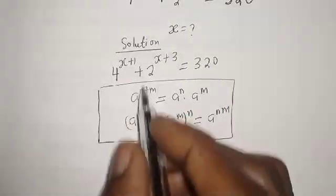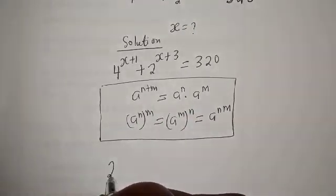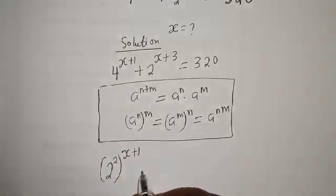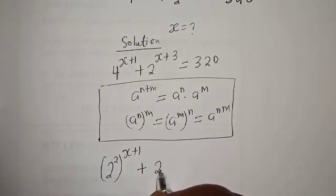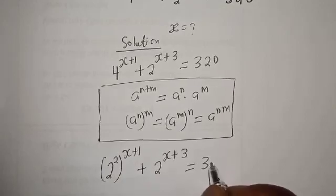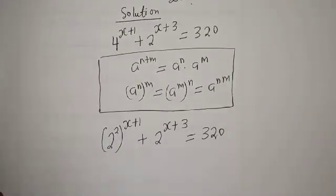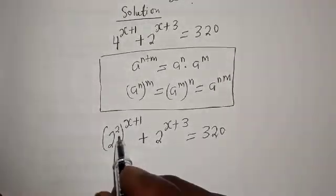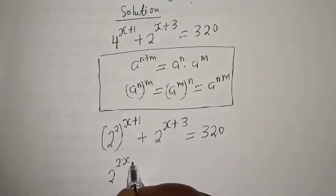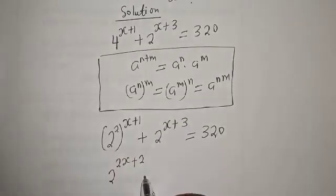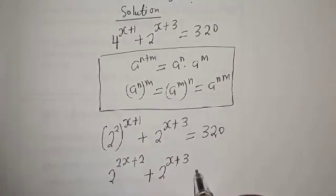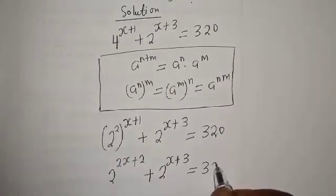Then this can be written as 2 squared raised to the power of x plus 1, plus 2 raised to power x plus 3, is equal to 320. Then this can be written as 2 raised to the power of 2x plus 2, plus 2 raised to power x plus 3, is equal to 320.